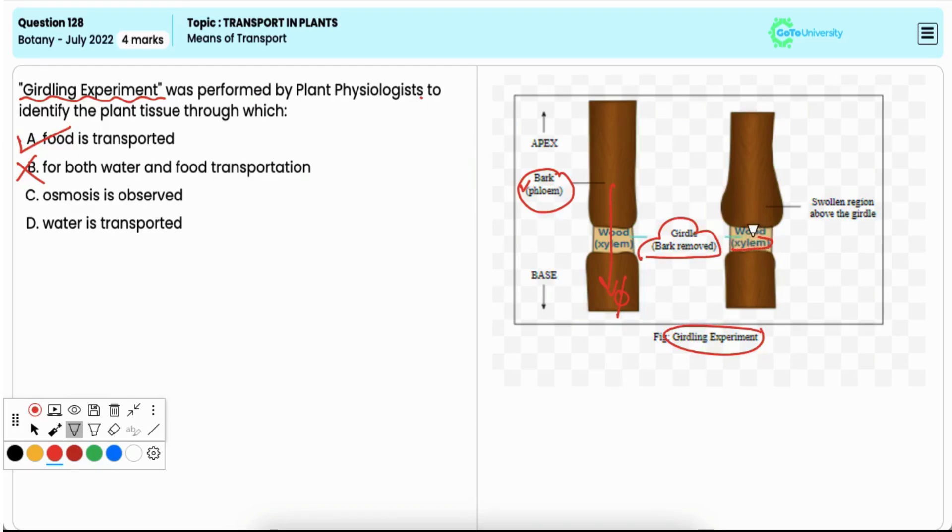Option C: osmosis is observed. This is also incorrect. Osmosis refers to the movement of water across a semi-permeable membrane and is not related to the girdling experiment, which focuses on the transport of food through phloem.